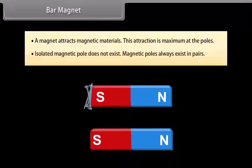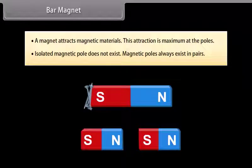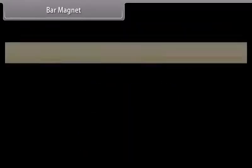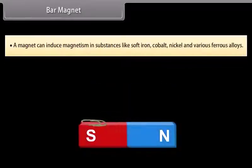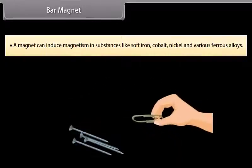Isolated magnetic poles do not exist; magnetic poles always exist in pairs. A magnet can induce magnetism in substances like soft iron, cobalt, nickel, and various ferrous alloys.